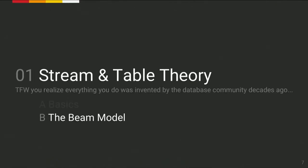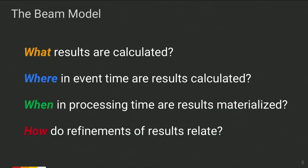Now let us introduce the Beam model. Beam model is a way of thinking about data processing pipelines. Apache Beam is an implementation of that. It allows you to specify a pipeline by answering four questions in order. First: what results are calculated? This is your core business logic — are you calculating sums, averages, building histograms or machine learning models? Second: where in the event time are results calculated? You might be interested in how your data behaved two days ago between 1 p.m. and 2 p.m., comparing data hour by hour. This is windowing.